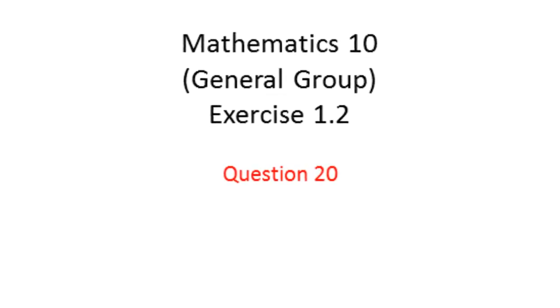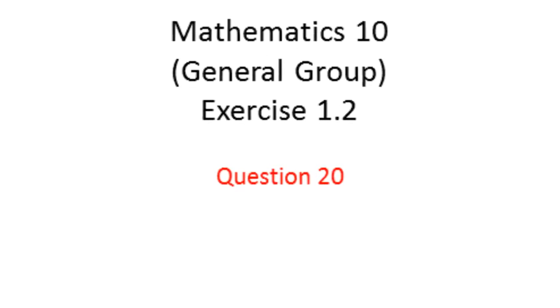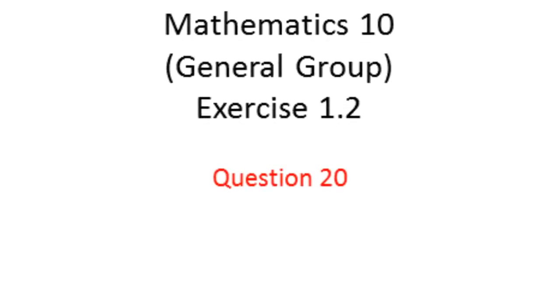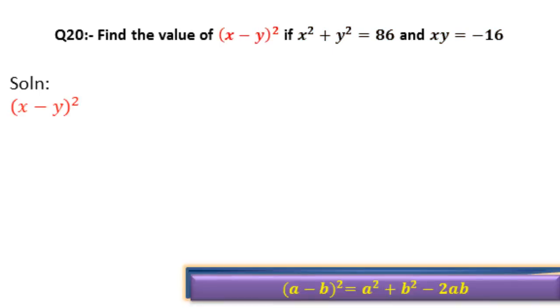Next we are going to solve question number 20 of 10th class math general group exercise 1.2. Question 20 is: find the value of (x - y)² if x² + y² = 86 and xy = -16. Now let's see its solution.